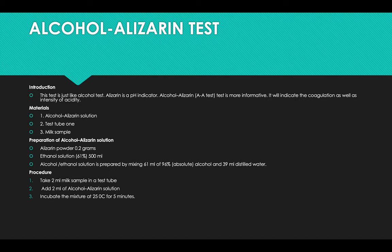Alcohol alizarin test is just like alcohol test. Alizarin is a pH indicator. Alcohol alizarin test is more informative as it will indicate the coagulation as well as intensity of acid. Alcohol alizarin solution is used in this test. A simple test tube is required and milk sample is required. For preparation, we need 0.2 grams of alizarin powder and 500 ml of 61 percent ethanol solution.